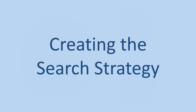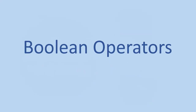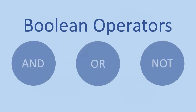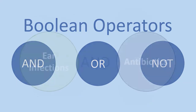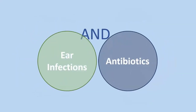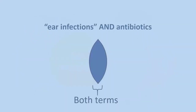Once you have a list of keywords and subject headings, you can begin to create your search strategy. Databases use the Boolean operators AND, OR, and NOT to connect terms and concepts to create a search string. Boolean AND is usually used to join different concepts together — it tells the database to retrieve only those records that have both terms, which focuses your search and retrieves fewer results.